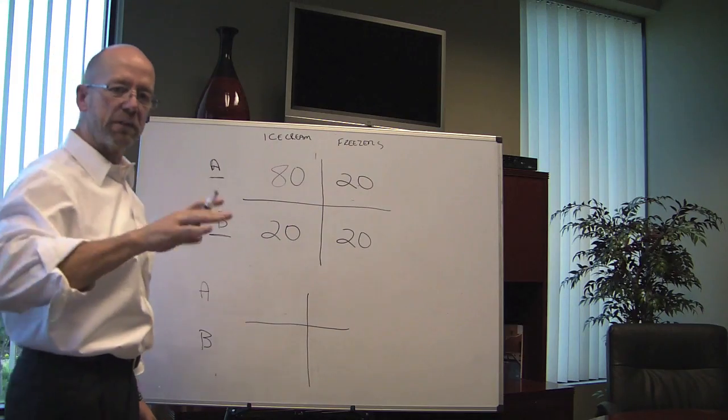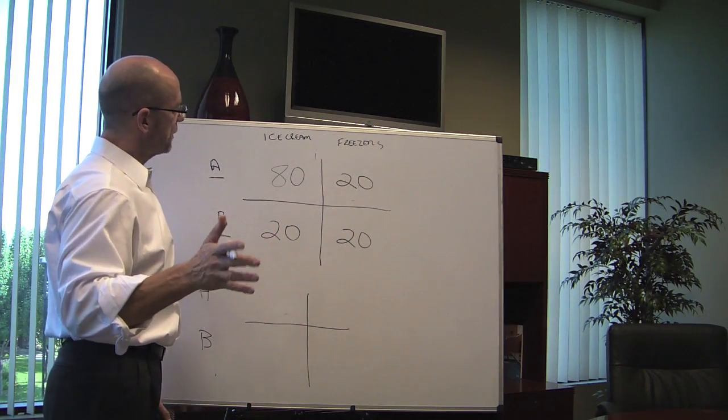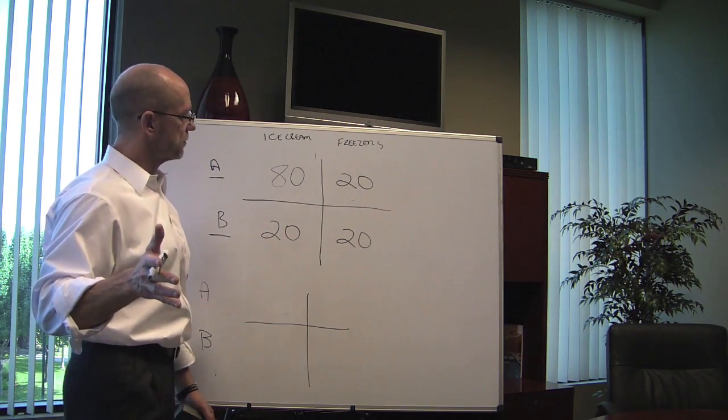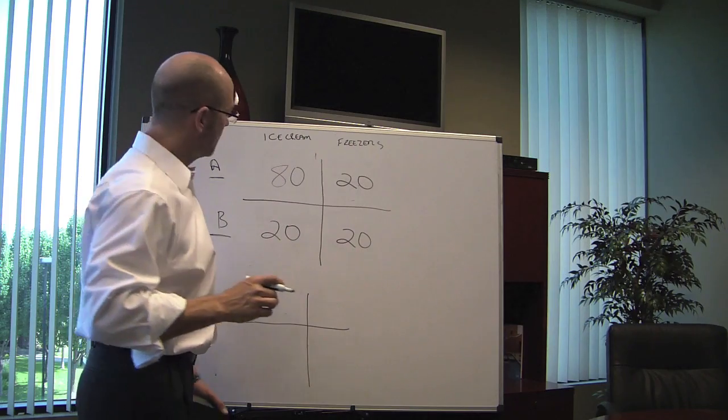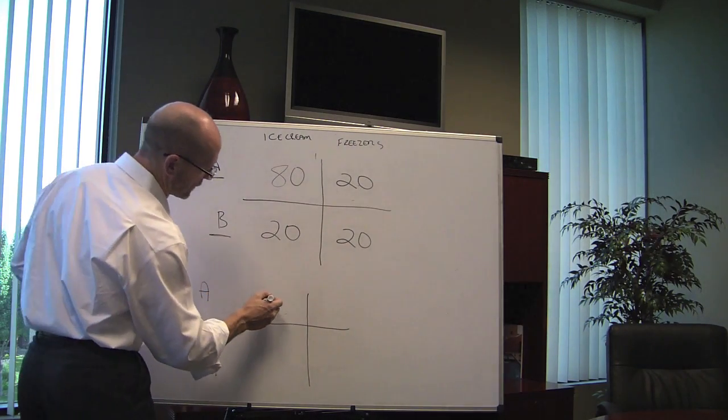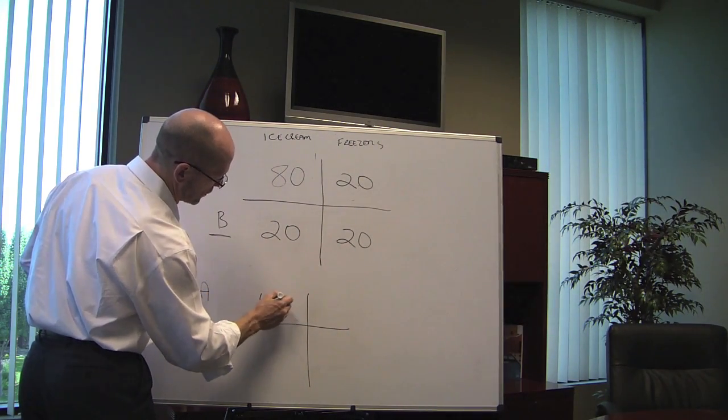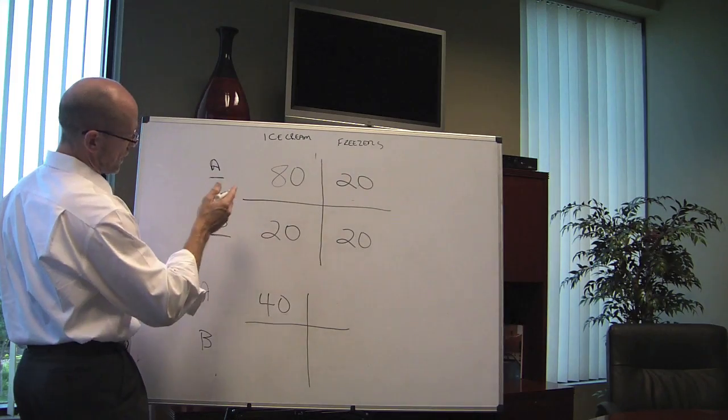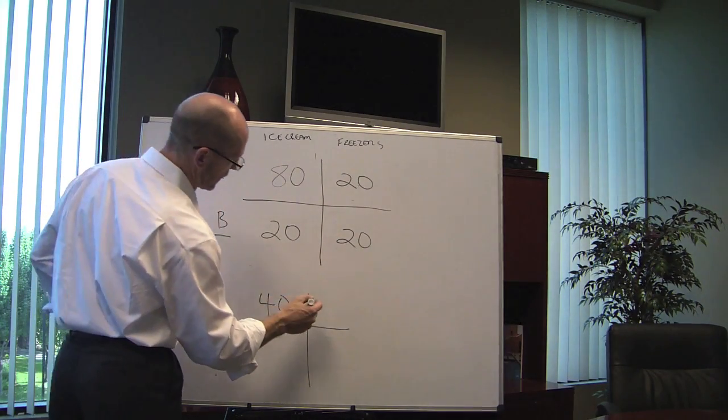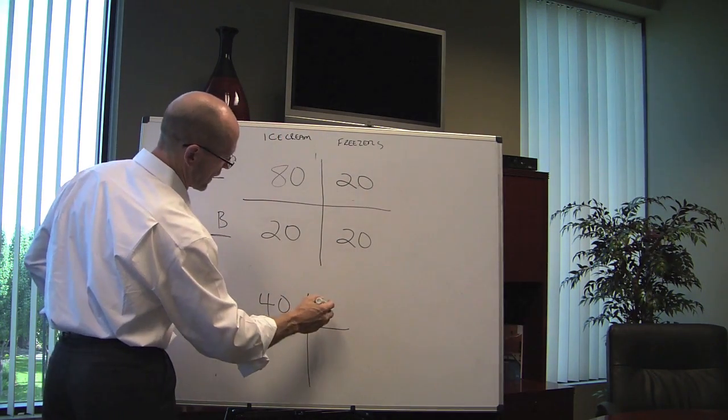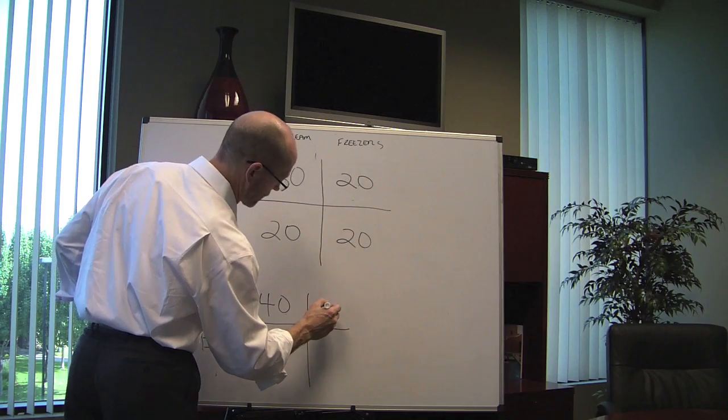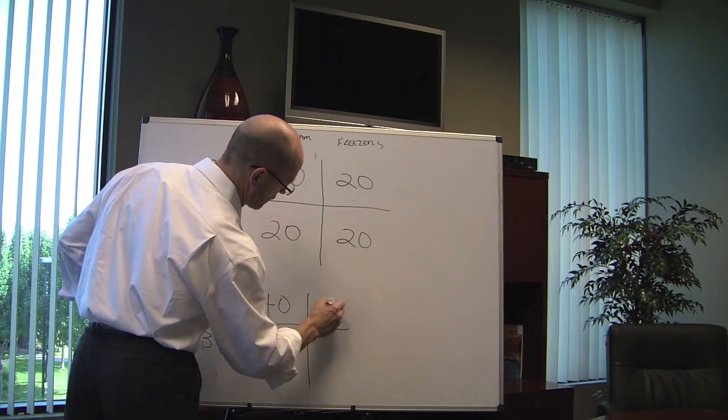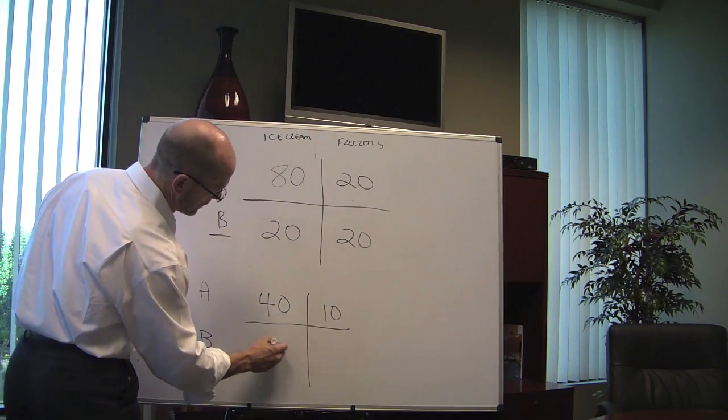Well, of course, you need both, right? I mean, you can't have ice cream without freezers. Not for very long, anyway. And so what they do is they divide their time. They divide their resources in the course of the day, meaning A is going to split the time evenly and spend half of its day on ice cream and half of its day on freezers. B is going to do the same.